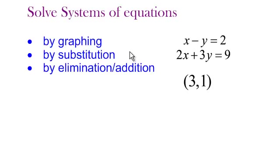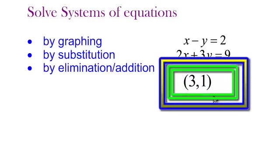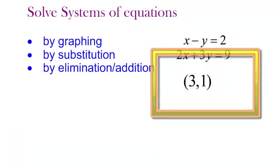So when we solve this system of equations by substitution, we got 3, 1. When we solved it by elimination, we got 3, 1. And even when we solved it by graphing with the graphing calculator, we got 3, 1. And that's not magic. That is mathematics.